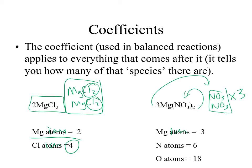These coefficients out front are particular to the reaction itself. Once you get your balanced chemical equation, you'll find out what the coefficients are, and you need to be able to use them to count. This is how you get the coefficients in the first place — to make sure that the atoms are equal on both sides.